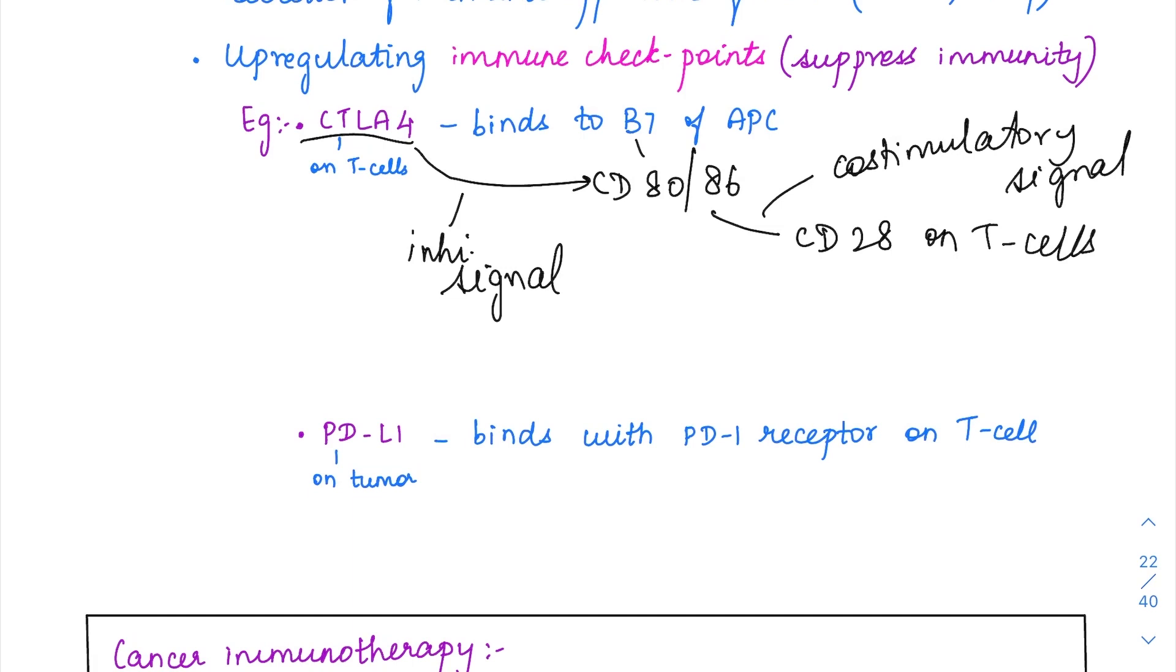In cancer immunotherapy, what they do is they are going to activate the immune system only so that these immune T cells can come and attack the tumor cells and kill them. They are basically boosting up the immune cells only in cancer immunotherapy.